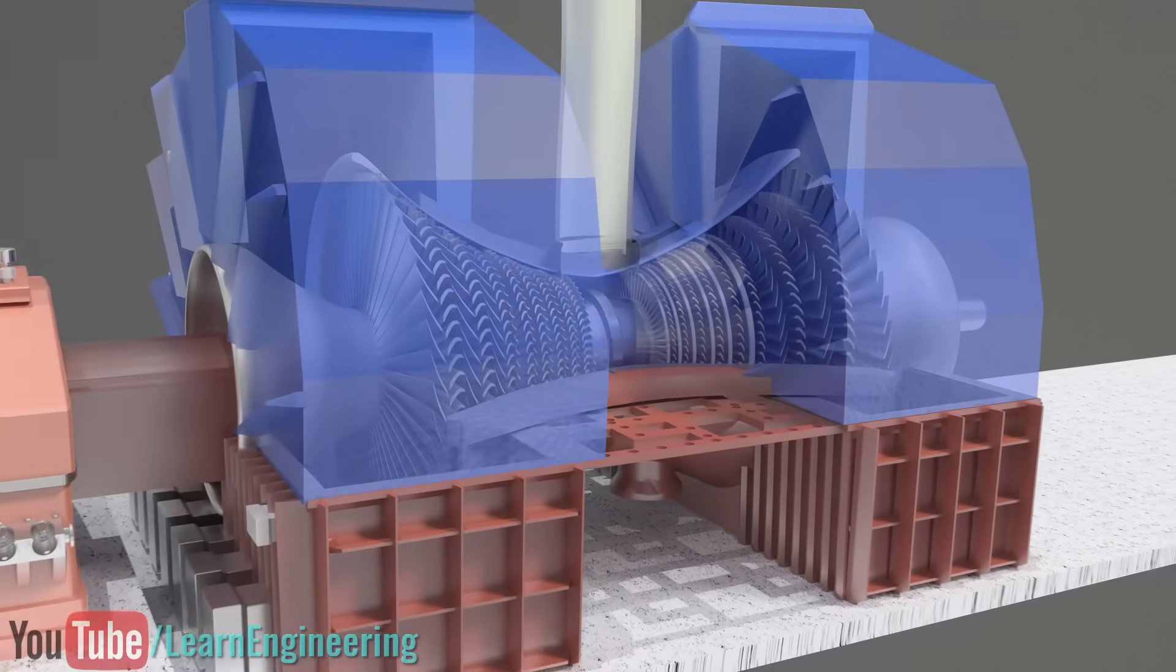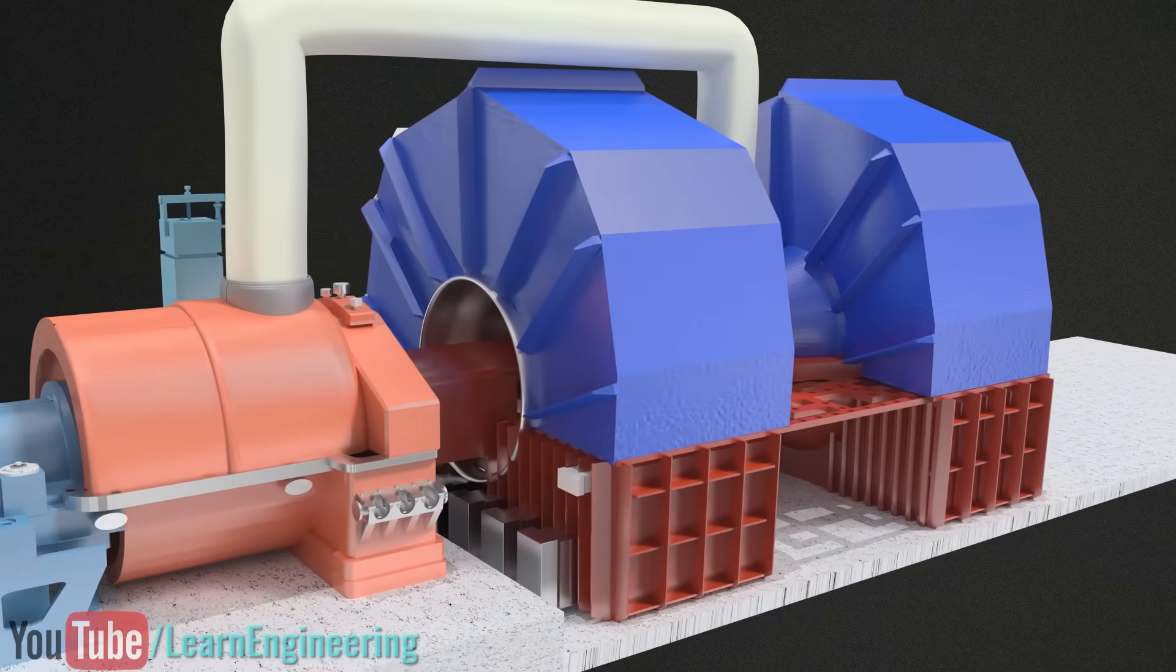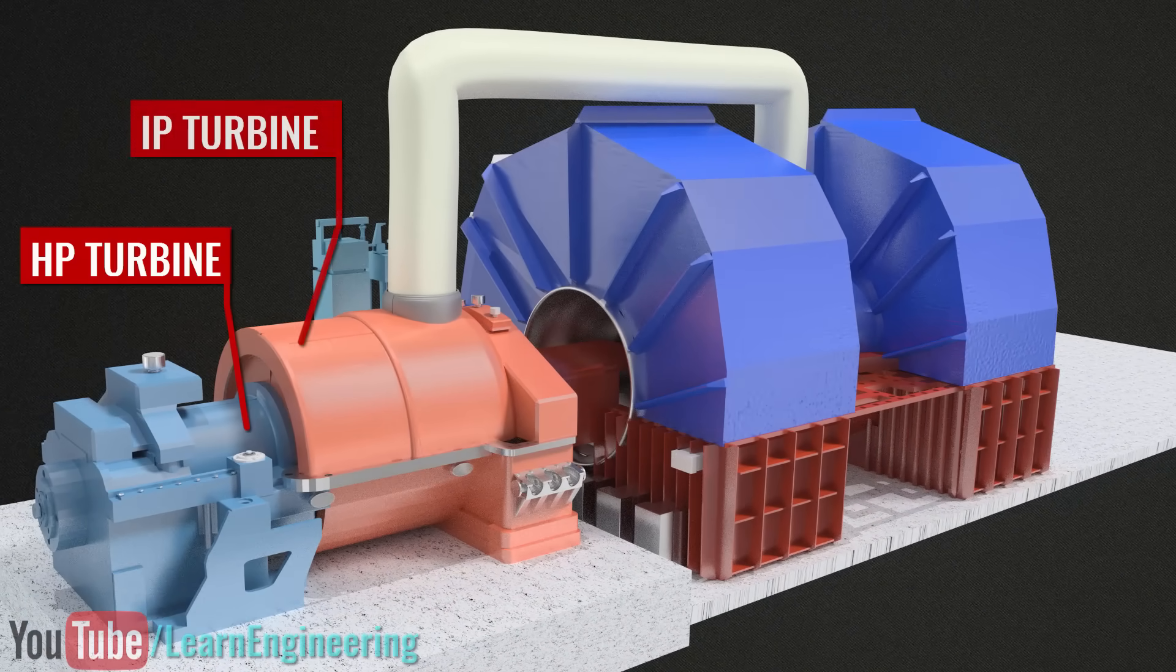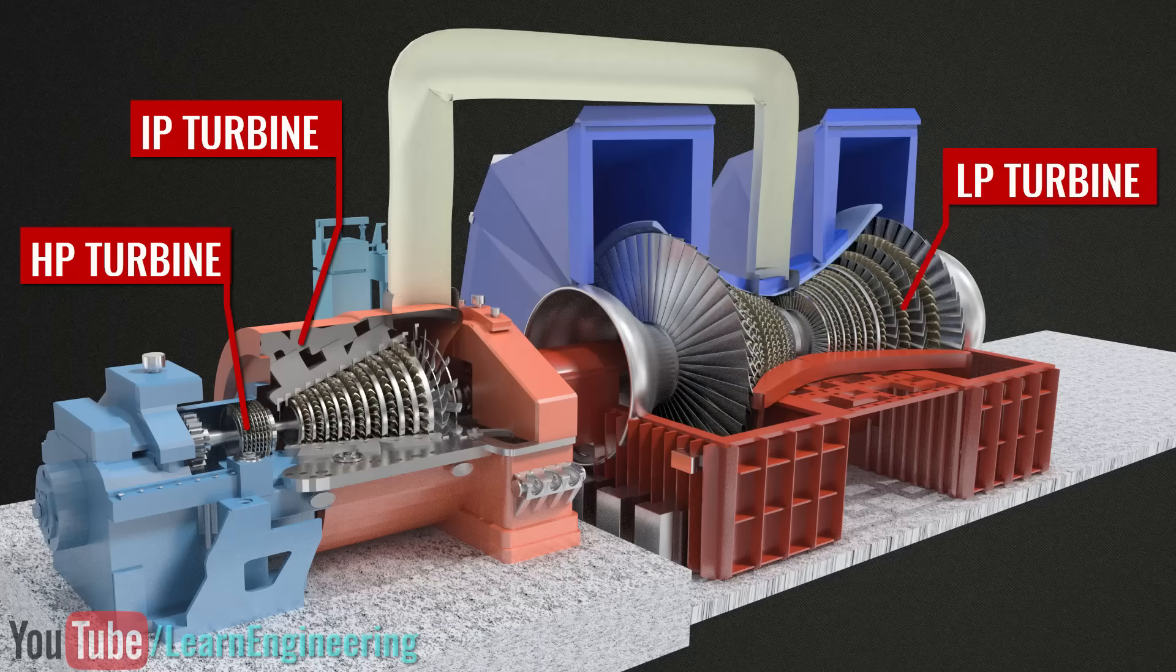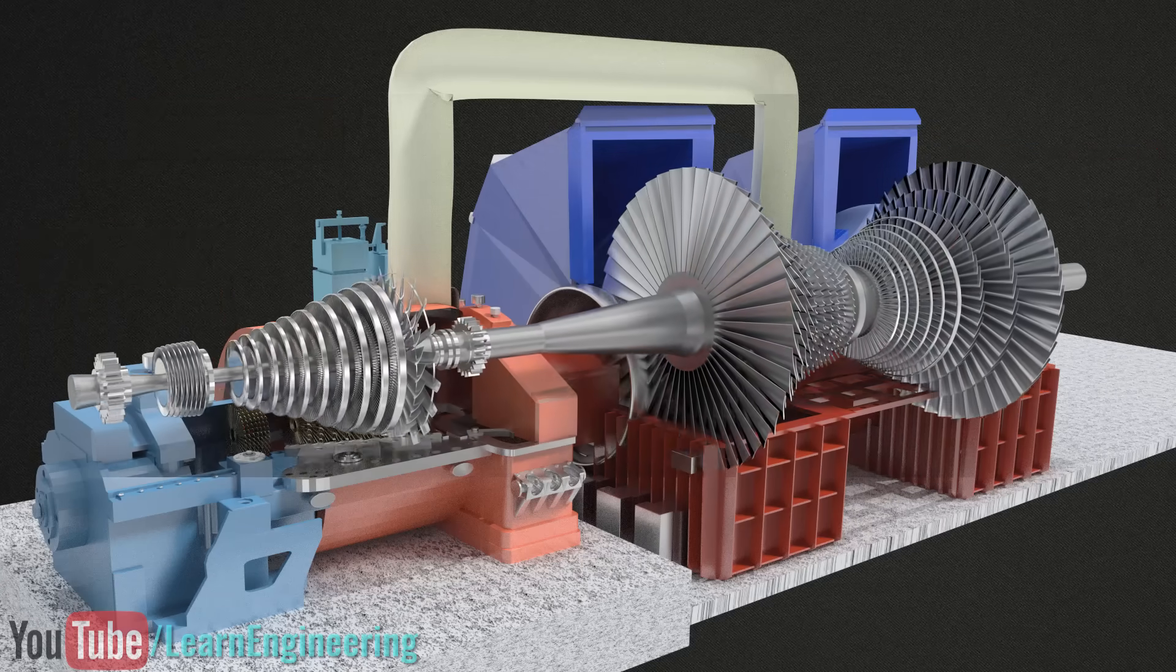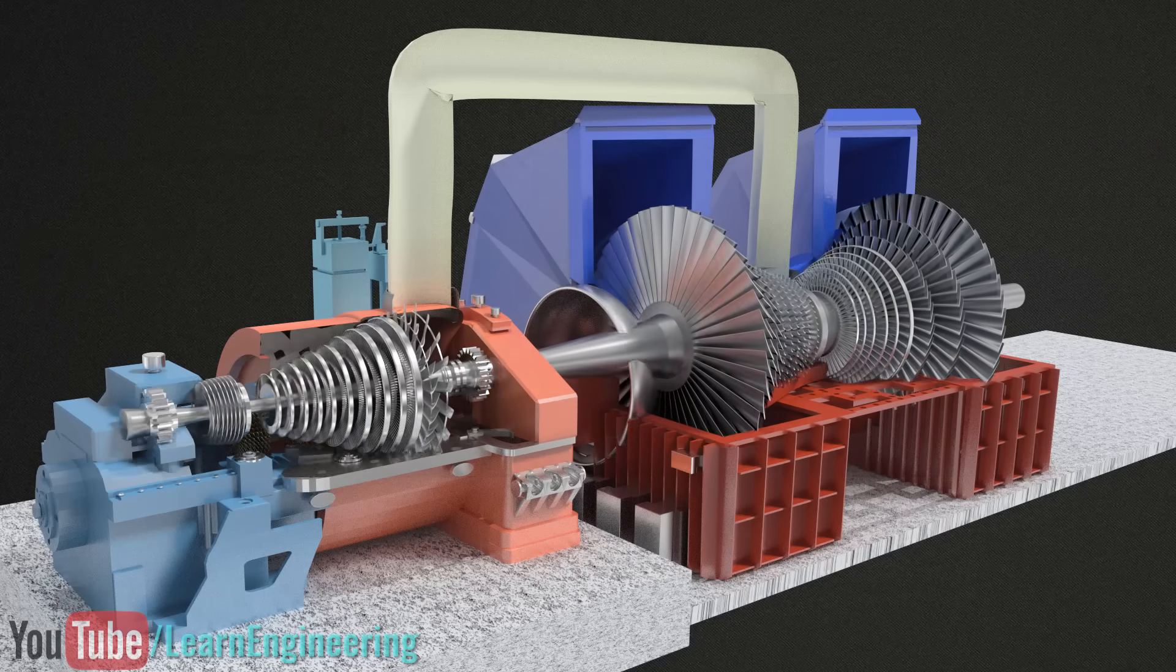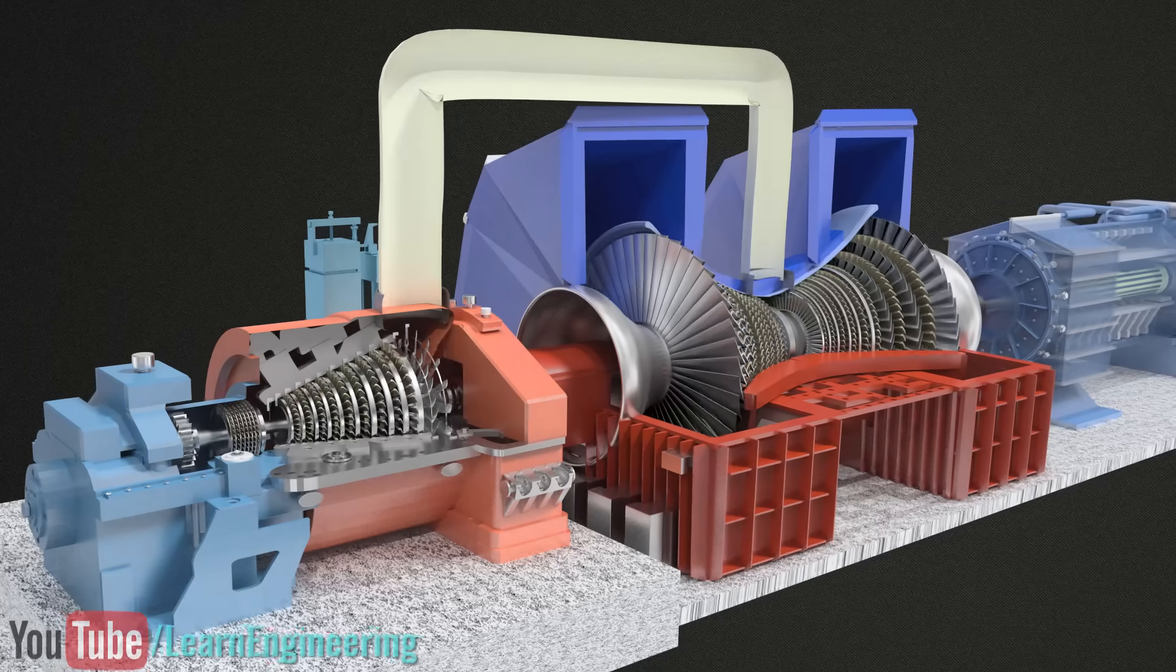High capacity power plants use different stages of steam turbines, such as high pressure turbine, intermediate pressure turbine, and low pressure turbines. All these units are attached to a single rotating shaft. The shaft in turn is connected to a generator.